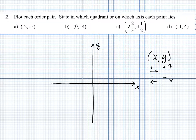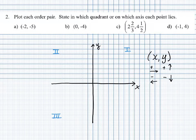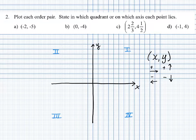We number those quadrants beginning in the upper right corner as quadrant one, and then go counterclockwise. So the upper left corner is quadrant two, the bottom left corner is quadrant three, and the bottom right is quadrant four. We use Roman numerals to label those quadrants.